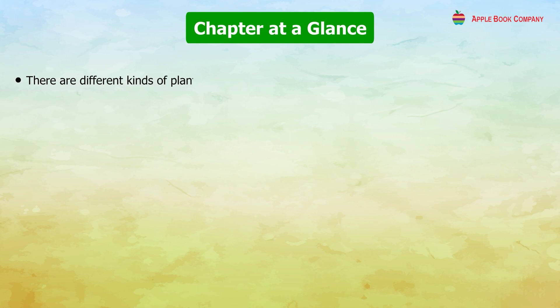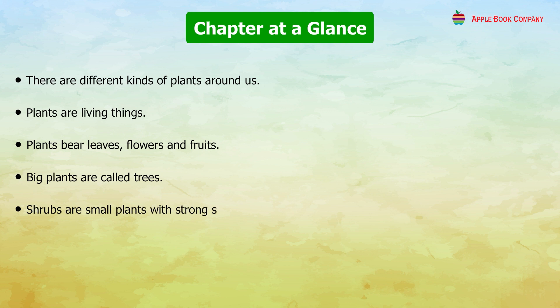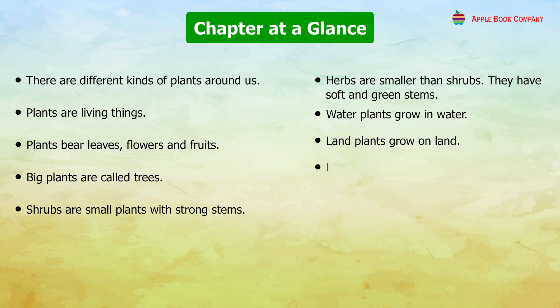Let us recollect our chapter. There are different kinds of plants around us. Plants are living things. Plants bear leaves, flowers and fruits. Big plants are called trees. Shrubs are small plants with strong stems. Herbs are smaller than shrubs and have soft and green stems. Water plants grow in water. Land plants grow on land. Most plants come from seeds. Plants clean the air. We should take care of plants.